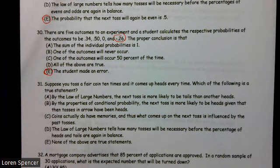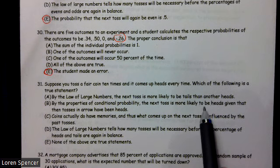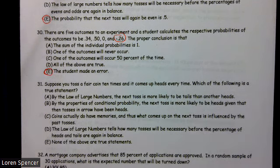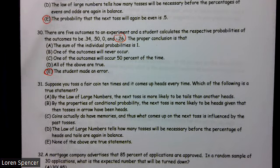Suppose you toss a fair coin 10 times and it comes up heads every time. Which of the following is a true statement? By law of large numbers, the next toss is more likely to be tails than others. No, law of large numbers doesn't impact that. Law of large numbers says if we do it over and over again, we expect it to get to the actual probability, which is 0.5, but law of large numbers does not go to a single toss.